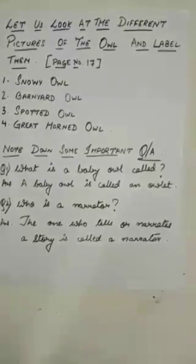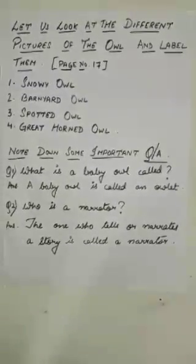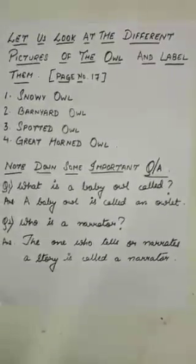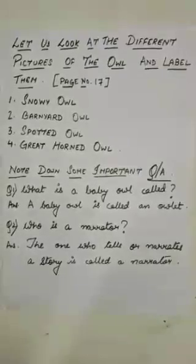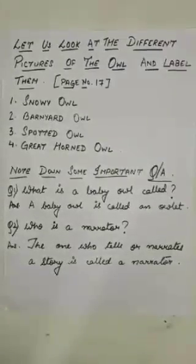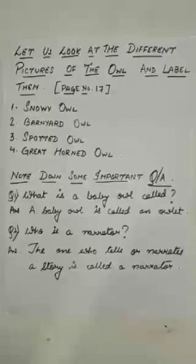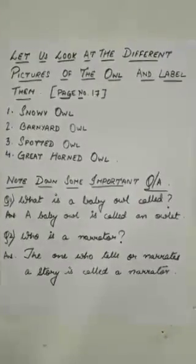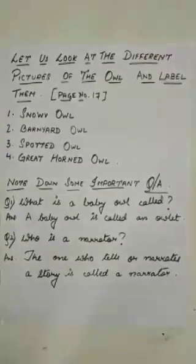Let us look at the different pictures of the owl and label them. Page No. 17 — First is Snowy Owl, second one is Barn Owl, third is Spotted Owl, and fourth is Great Horned Owl.